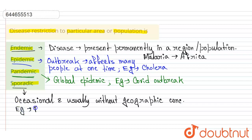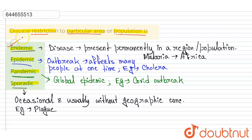Examples of sporadic diseases include tetanus, rabies, diabetes, and plague. Coming back to the question — disease restriction to a particular area or population — this matches the definition of endemic, where the disease is permanently present or restricted to a region or population. So endemic is our answer.